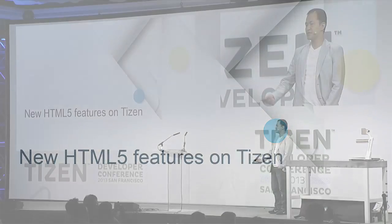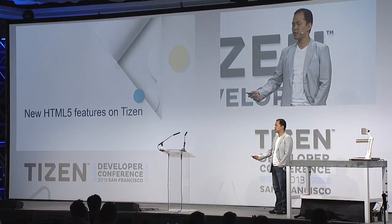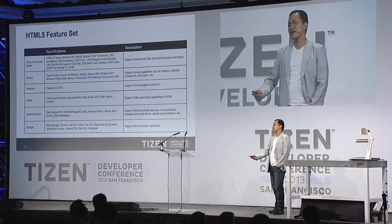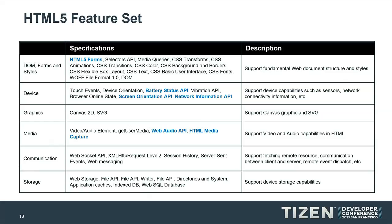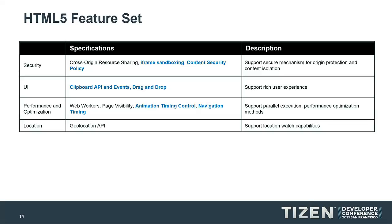I want to mostly focus on this: what are the new HTML5 features on Tizen right now? There are a lot of HTML5 features, like DOM, form, style, device API, graphics, media, communication, and storage. There are also features like security, UI, performance optimization, and location. To see in detail which W3C standard APIs are supported in Tizen, I recommend visiting developer.tizen.org, where reference documents are available.